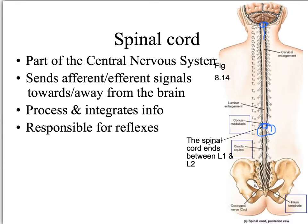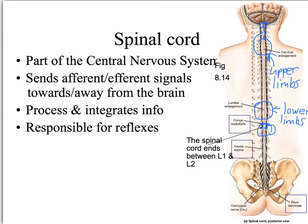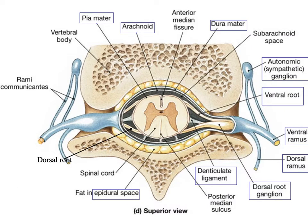Looking at the spinal cord again, in the neck region there is a thickened or enlarged portion called the cervical enlargement, which supplies nerves to the upper limbs. Then there's a similar thickening in the lower back called the lumbar enlargement, which gives off nerves to the lower limbs.